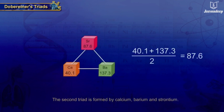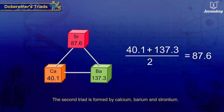The second triad is formed by Calcium, Barium, and Strontium.